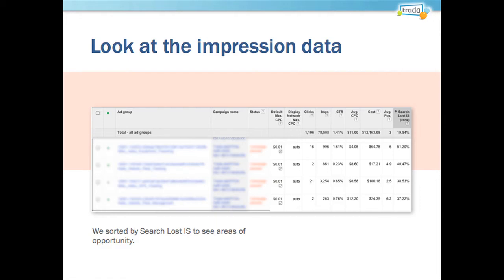Some people scratch their heads and ask how the difference between position five and position three changes Impression Share. It has a lot to do with a few things. As Google loads more dynamic and rich content on these pages — like local maps or YouTube links — they vary the number of ads shown. Sometimes falling to position five or six no longer puts you on the first page. Also, if you're opted into Google's search partners, some partners only show ads from the top one to four spots, so you could be losing Impression Share from their partner network as well.